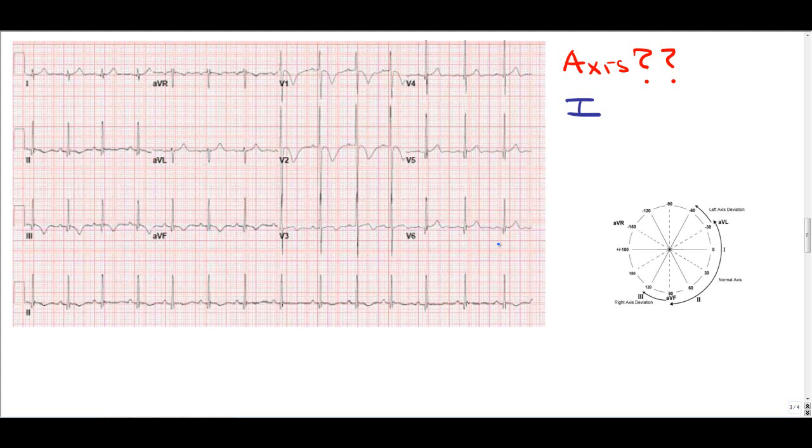So lead one, lead one actually here looks either slightly positive or isoelectric, which is interesting and will kind of help us. So if lead one is isoelectric, it means that the axis is completely perpendicular to that lead. It can be any lead, but in this case, it's lead one. So lead one is almost isoelectric to maybe a little bit positive. So this axis has to be at least perpendicular to lead one. So I outlined where in purple that is.